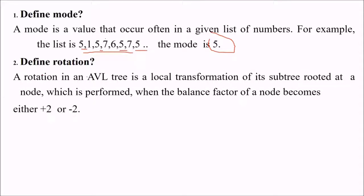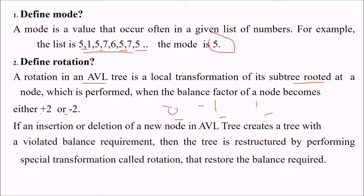Define rotation. A rotation in an AVL tree is a local transformation of its subtree rooted at a node which is performed when the balancing factor of a node becomes either plus 2 or minus 2. If the difference in height is 0, minus 1, 1, it is okay. Otherwise, if it reaches 2 or minus 2, then this AVL tree needs rotation or balancing.